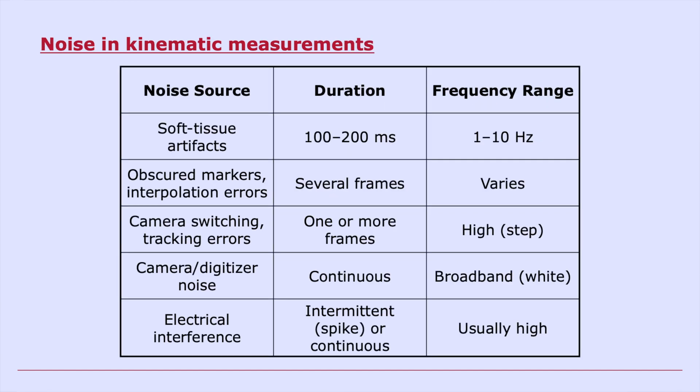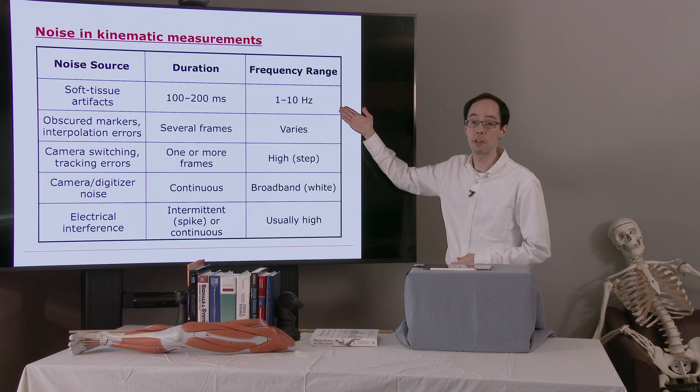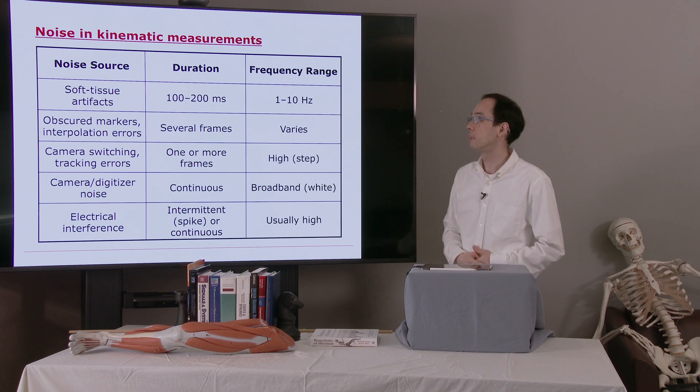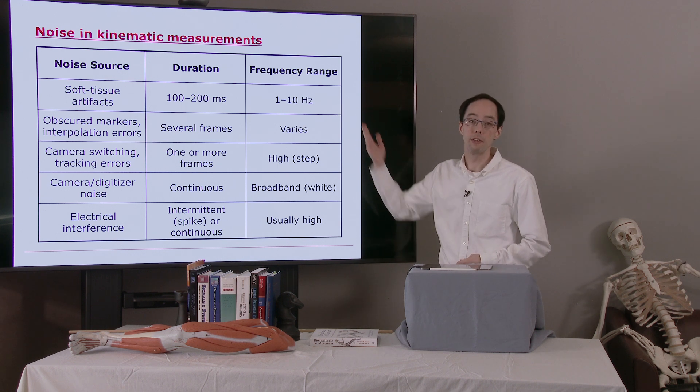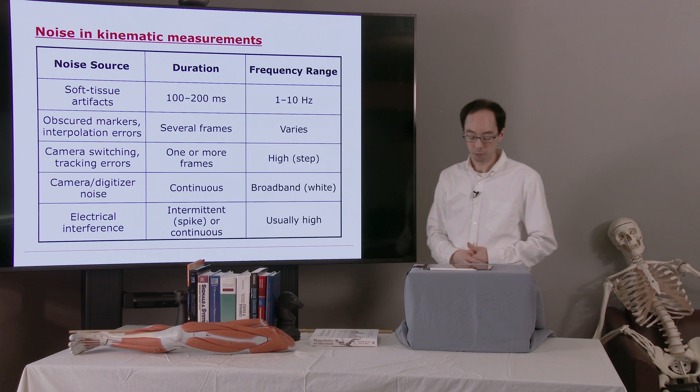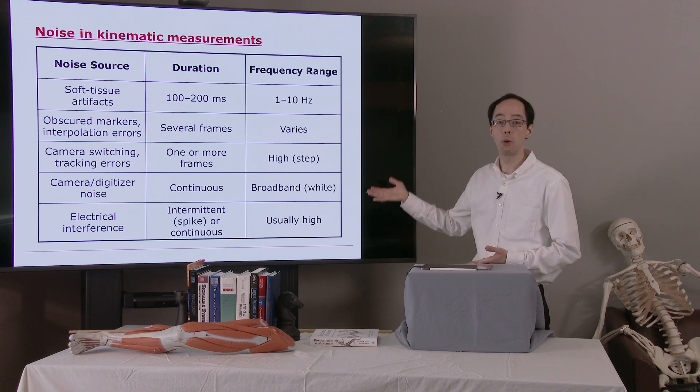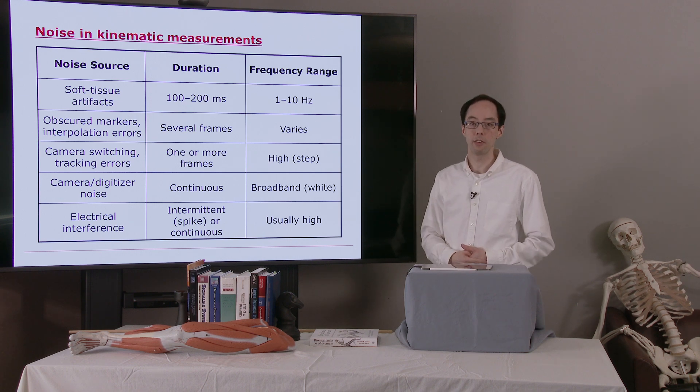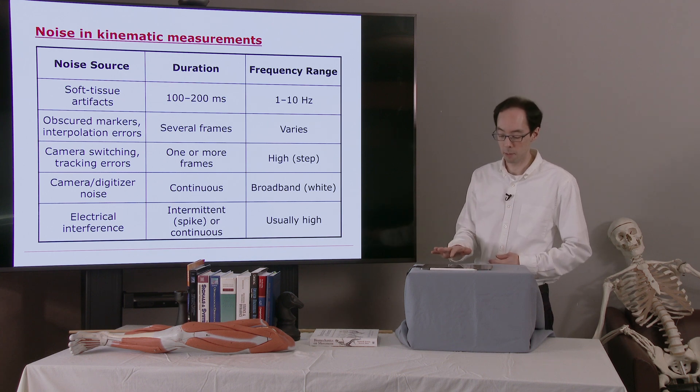There are many sources of error. We talked about soft tissue artifacts. It's probably the worst source of error in most motion capture experiments, and that tends to be in the frequency range right around what we care about. So this tends to be rather difficult to filter out. But it's good to be aware of the noise components in your signals before you do a numerical analysis on them.